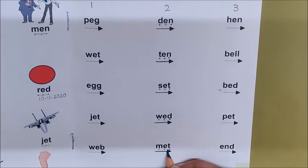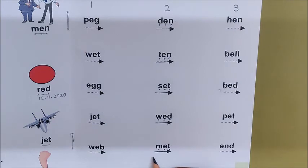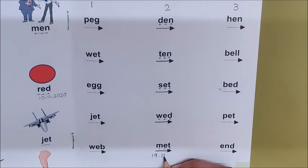Now time to write the date! Today is November 19th. Write the date: 19 dot 11 dot 2020. Very good!